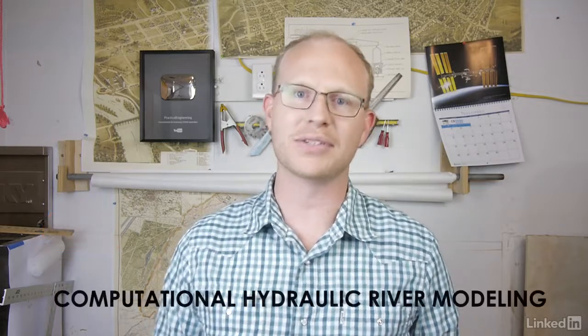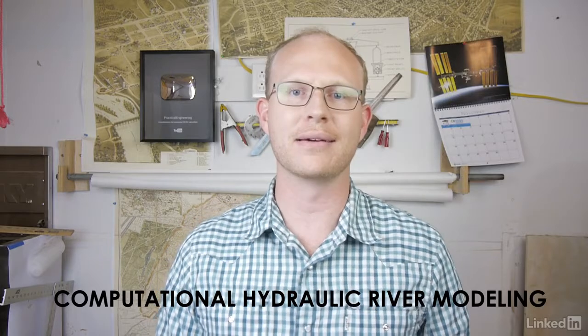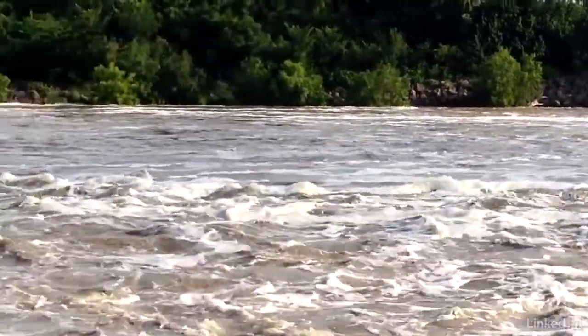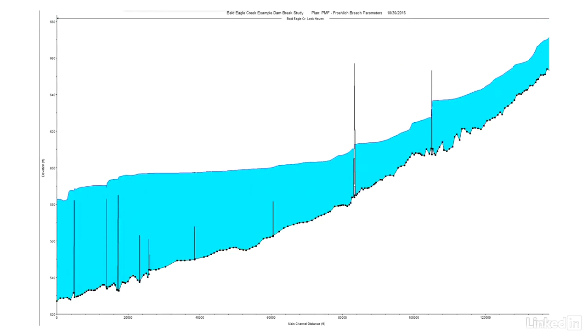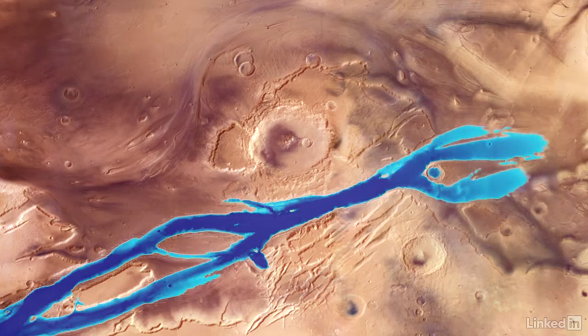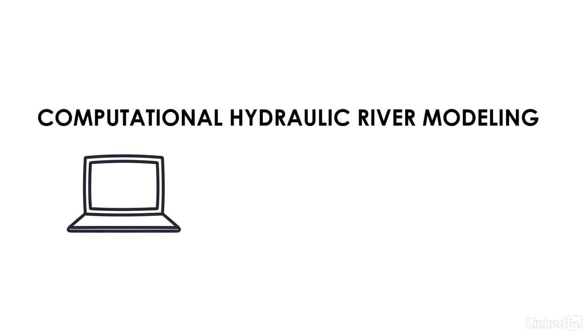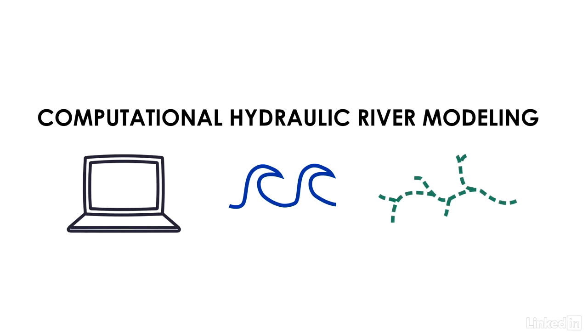I'm Grady and this is Practical Engineering. In today's video we're talking about computational hydraulic river modeling — computational because it's on a computer as opposed to a physical model like the one in Jackson, hydraulic because we're trying to understand how water moves through the system, and river model because we're creating a representation of the real world.